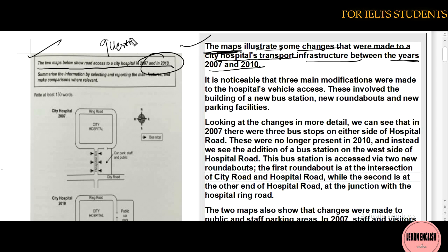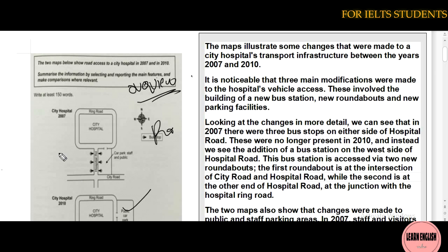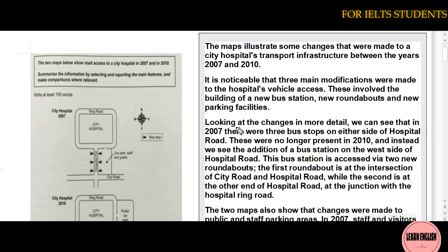Now I'm going to explain how to write the overview. In the overview we have to identify the three main changes that were made — to car parking, to the roundabouts, and to the bus station.